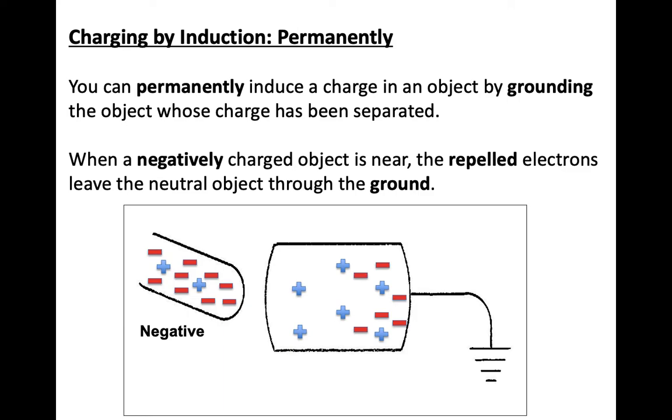We can permanently induce a charge in an object by grounding the object whose charge has been separated. When we have a negatively charged object near, the repelled electrons leave the neutral object through the ground. Noticing here we have our symbol for grounding.